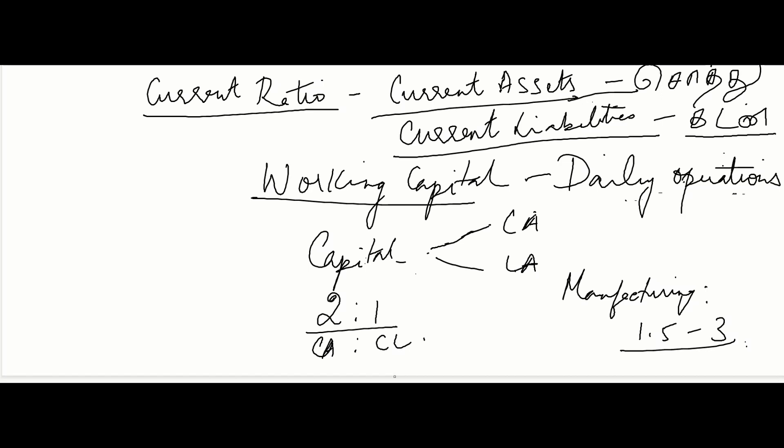Different sectors maintain different current ratios. Generally, you should compare your company against its competitors and rivals. What is the industry average current ratio in the sector? Then compare: what is the current ratio of this specific company? If the company's current ratio is less than the sector average, that means the company has fewer assets relative to the sector, and it shows they need to manage their finances more efficiently.